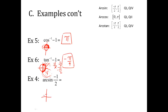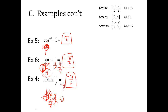Arc sine of negative 1/2. Arc sine's limitations come from quadrants 1 and 4. Sine is a y value, and this is negative, so we need a negative y — only quadrant 4. The angle at 11pi over 6 gives a y value of negative 1/2. Reflect it using the hamburger fold — it becomes negative pi over 6. Use the quadrant 1 name and apply a negative sign. The answer is negative pi over 6.